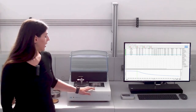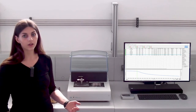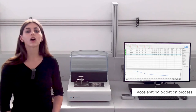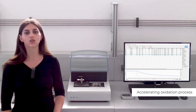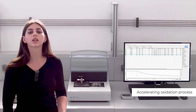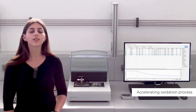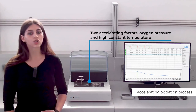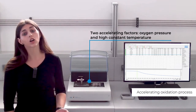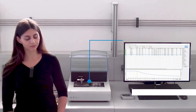How does the Oxytest work? The Oxytest speeds up the oxidation process, which in normal conditions can last weeks or even months, thanks to two accelerating factors: high constant temperature and oxygen pressure.